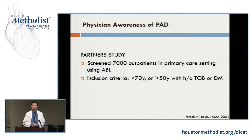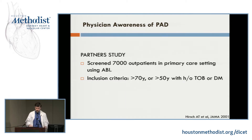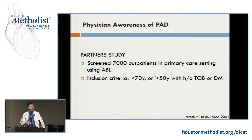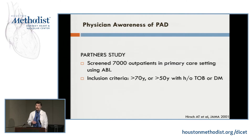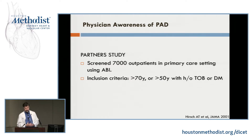What about physician awareness? I think in this group we're aware of peripheral arterial disease, but in primary care practices, maybe not so much. The PARTNER study looked at 7,000 outpatients in a primary care setting at risk for PAD — people over the age of 70, or over age 50 with another risk factor such as diabetes or smoking. They were screened with an ankle brachial index and a short questionnaire, and nurses reviewed medical records to see if the diagnosis had been made.